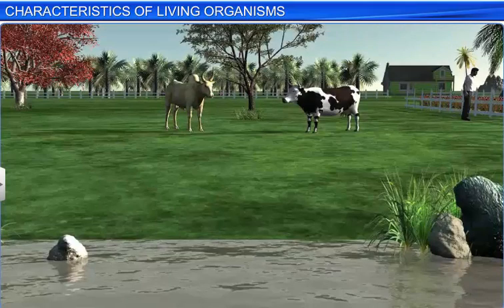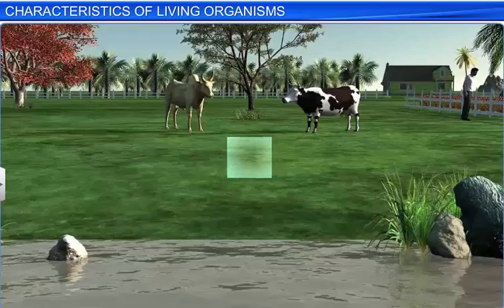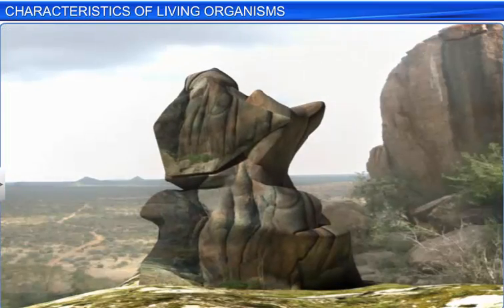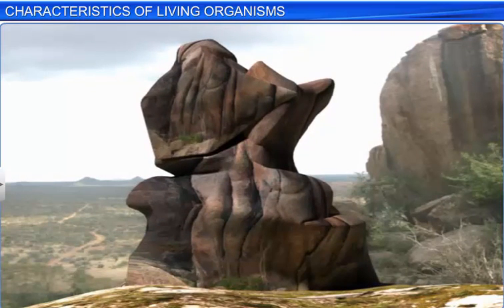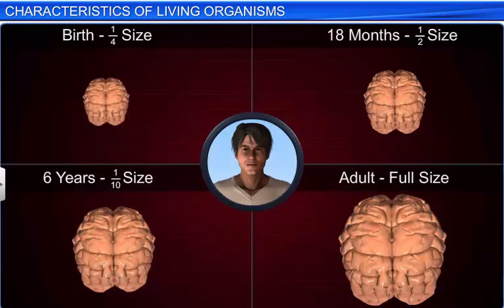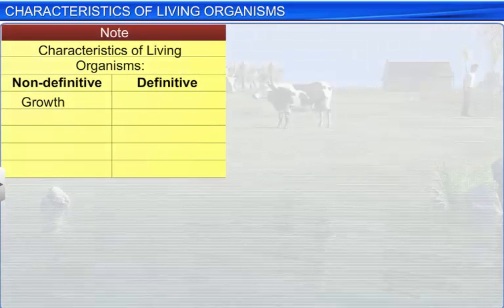However, everything that grows cannot be said to be a living organism. Take the example of a rock that will grow in size if sand gets deposited over it. However, this growth is external. On the contrary, growth in living organisms is internal. Growth is, thus, a characteristic feature of living organisms, though it is a non-definitive one.